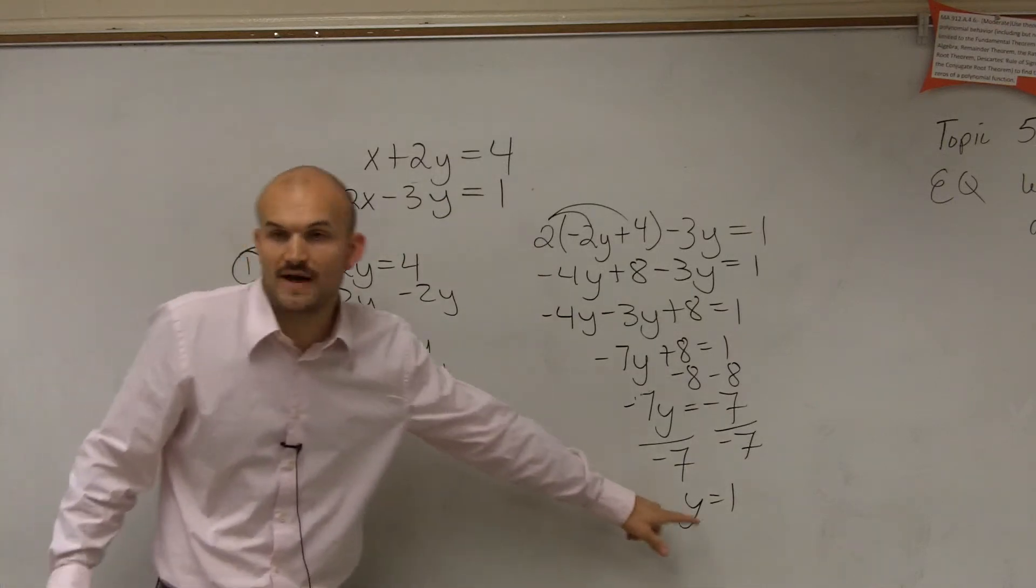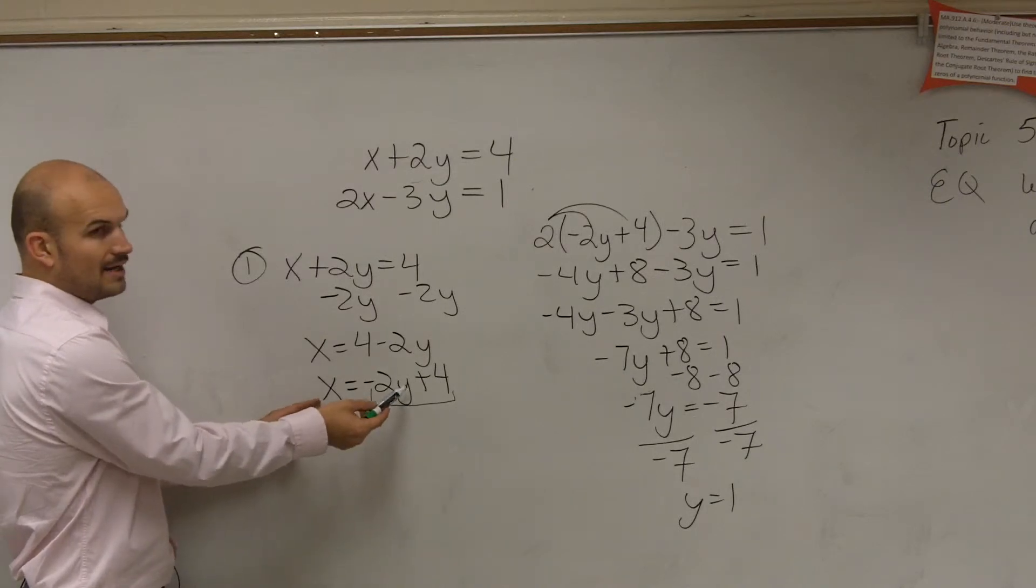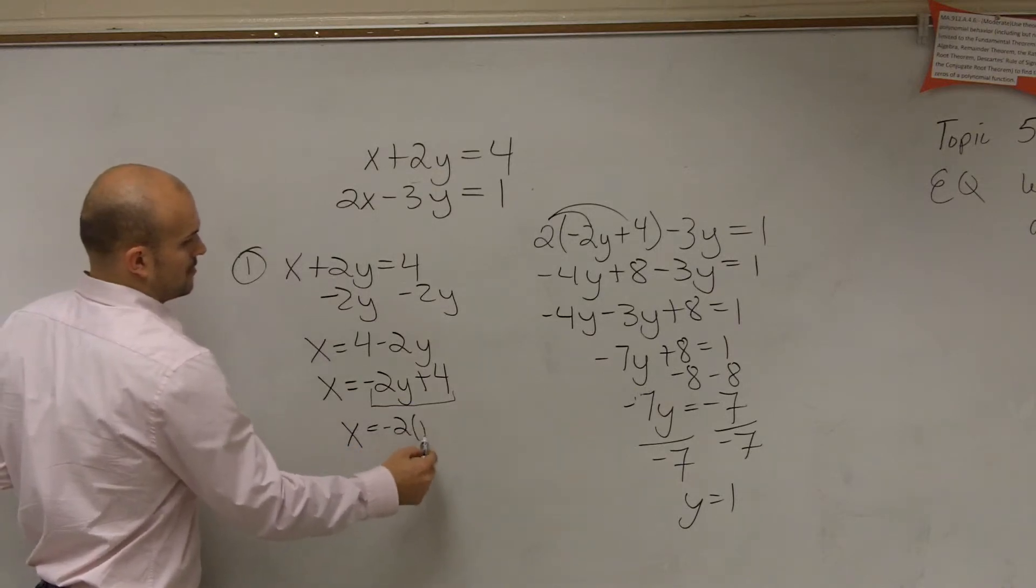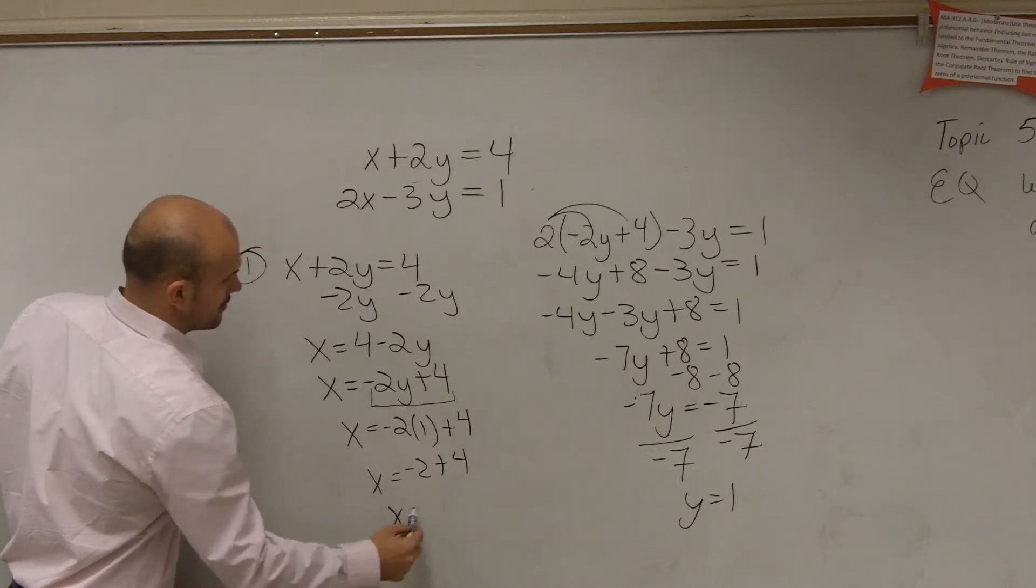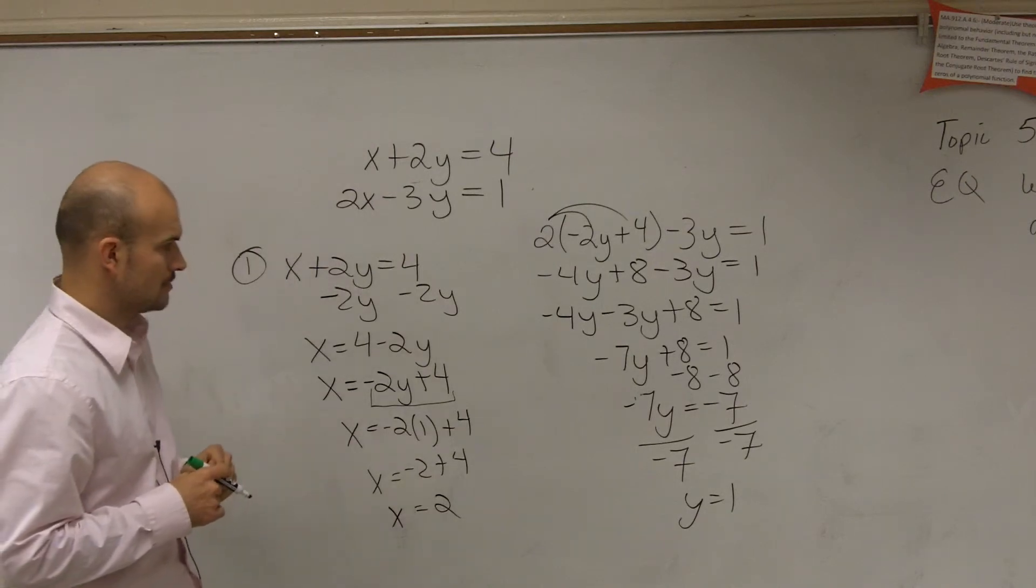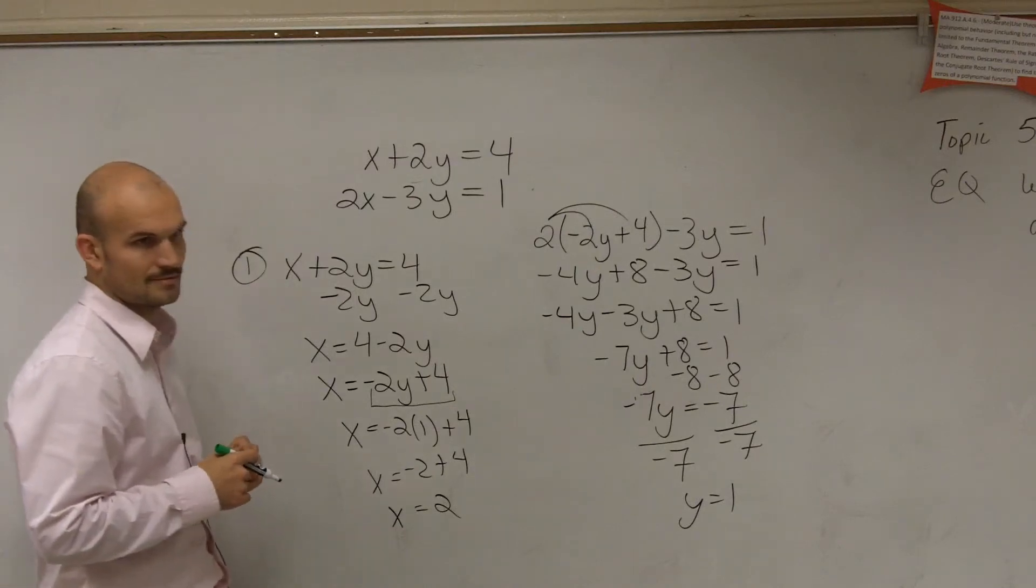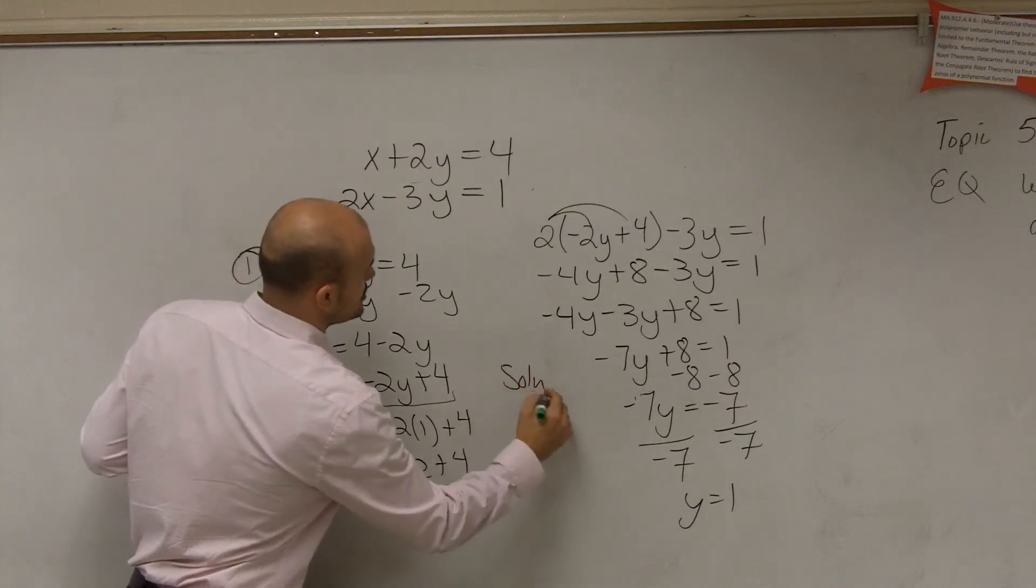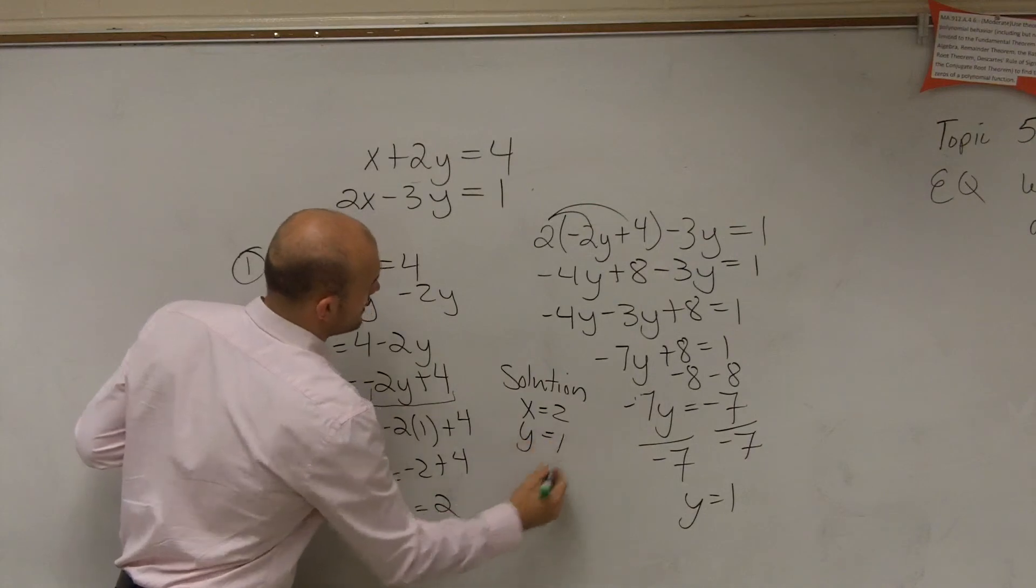So now, once we know the value of y, we go back to our original equation and say, alright, if I know the value of y, I can plug that in here and find the value of x. So therefore, the solution is going to be x equals 2, y equals 1.